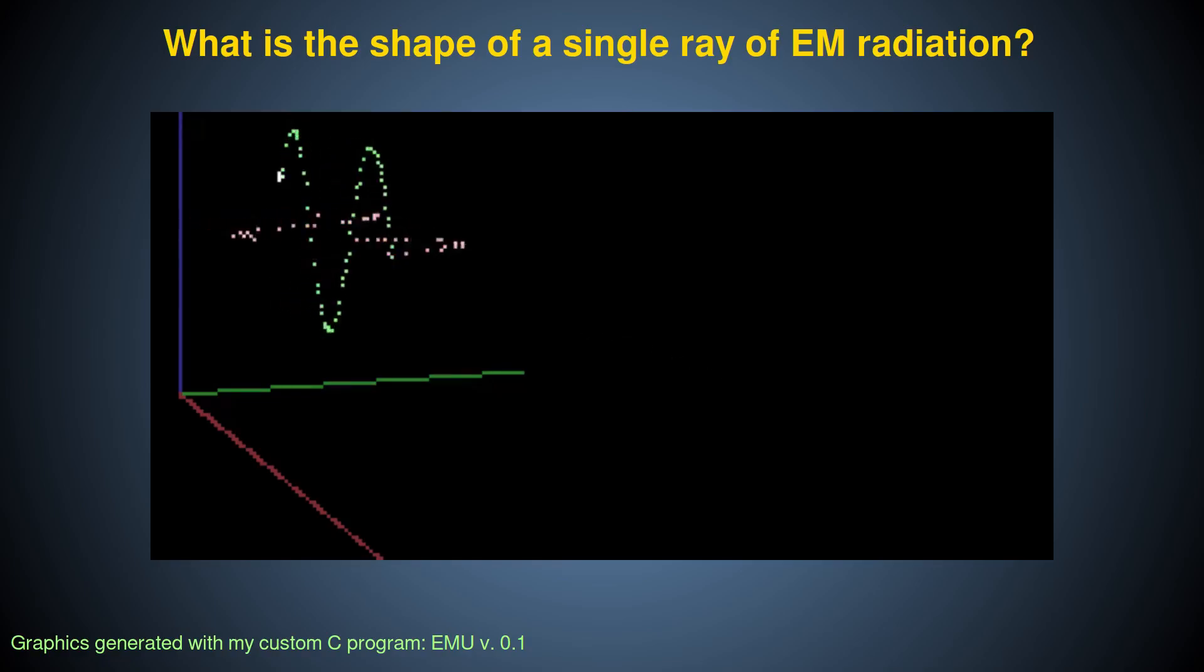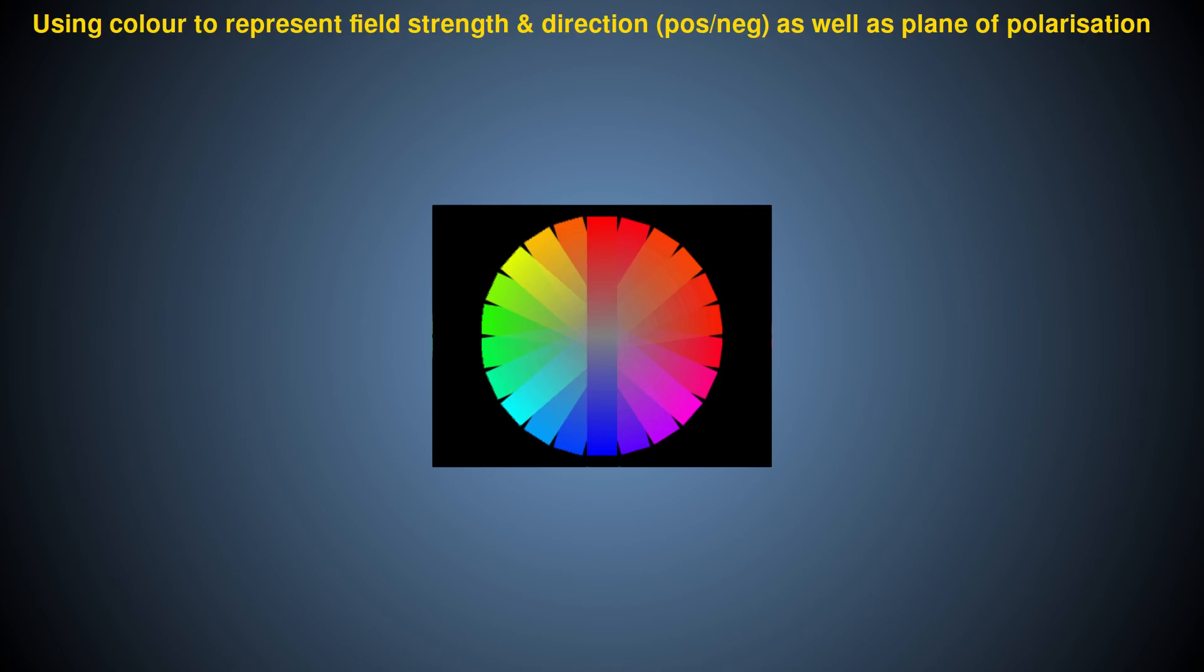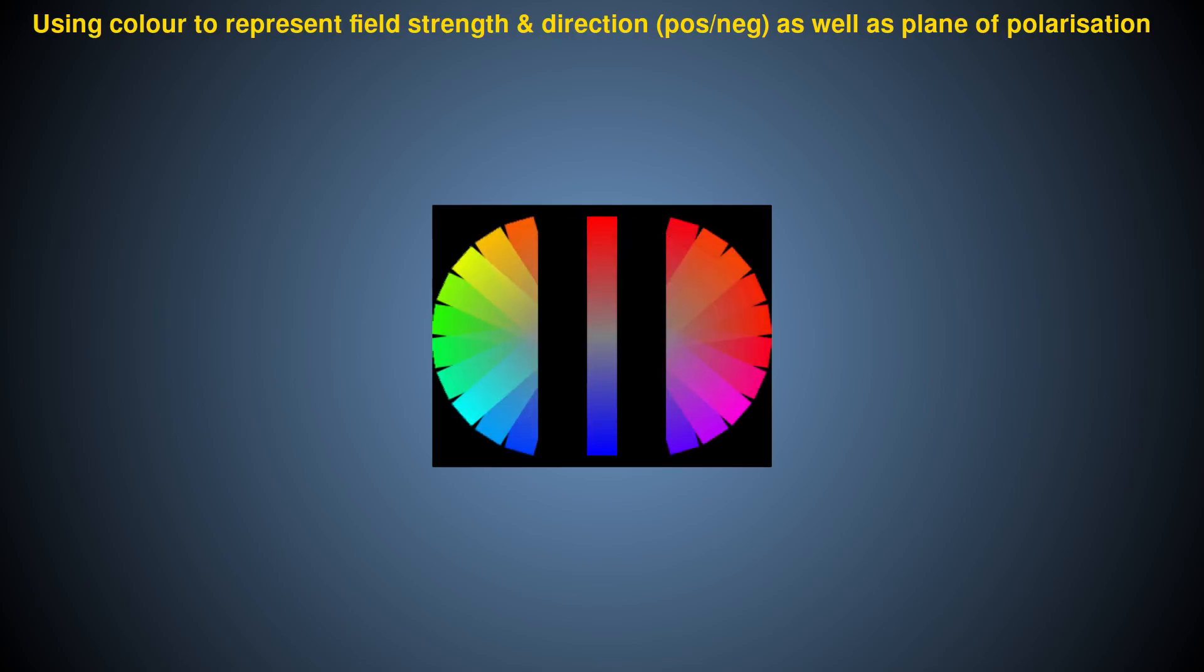To simplify the visualization, I'll only be showing the electric field component. We'll ignore the magnetic field component for now. I'll use opposite colors in this color disk to represent the positive and negative directions of the electric field, and I'll use the saturation, or purity, of the color to represent the strength of the field. So, this pure red color represents the strongest positive field strength. Diluting it with gray indicates a weakening positive field strength, and pure gray represents zero electric field strength.